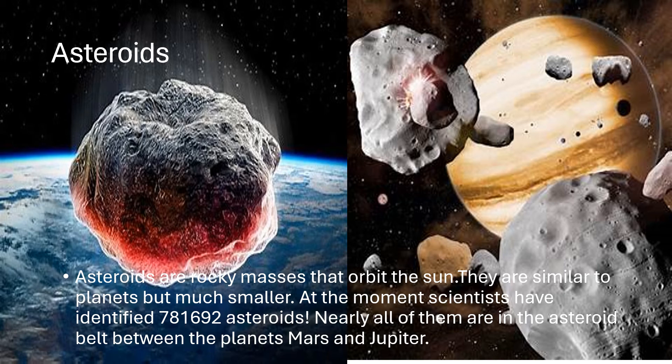Asteroids: Asteroids are rocky masses that orbit the sun. They are similar to the planets but are much smaller. At the moment, scientists have identified 781,692 asteroids. Nearly all of them are in the asteroid belt between the planets Mars and Jupiter.